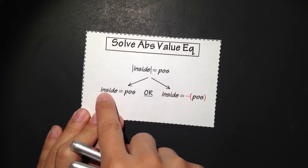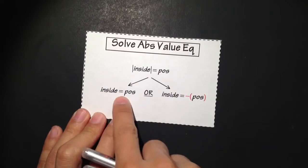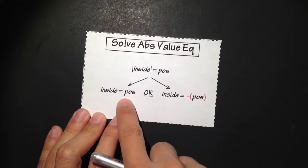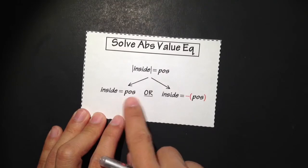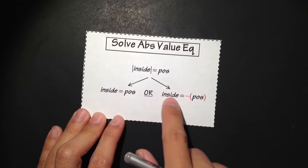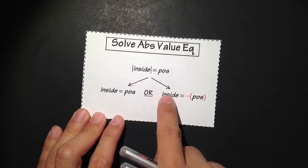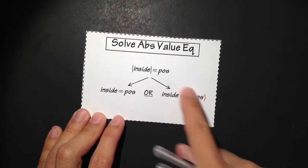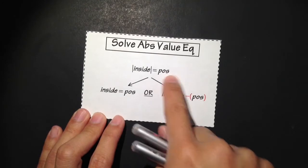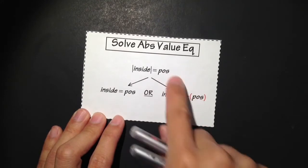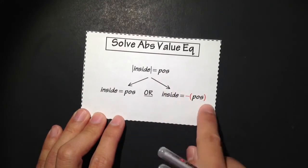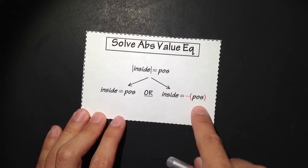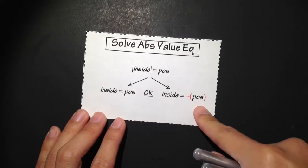The first equation is just whatever you have inside, equal to that positive number. Or the second case is that you take the inside and make it equal to the negative of that number — so you put the negative in front of that positive number. So you have the positive case and you also have the negative case.